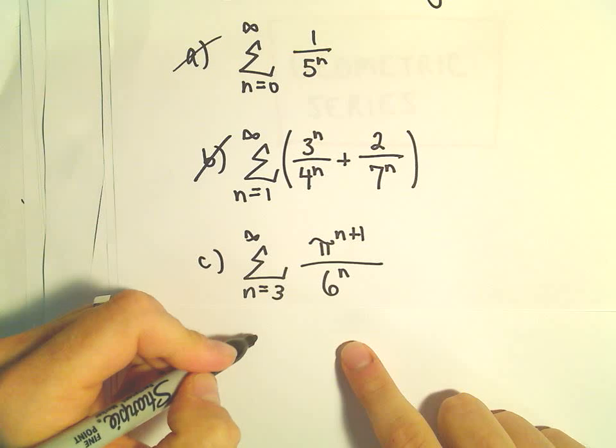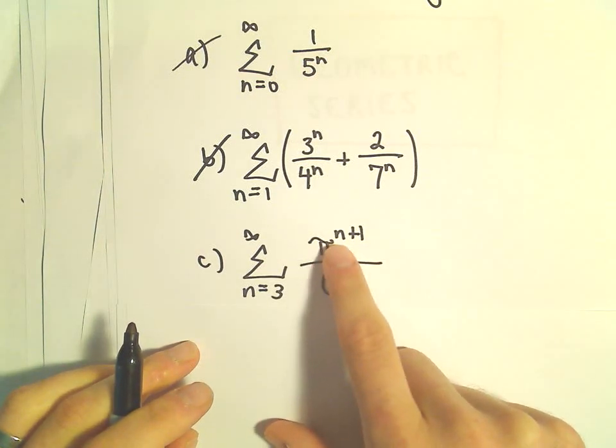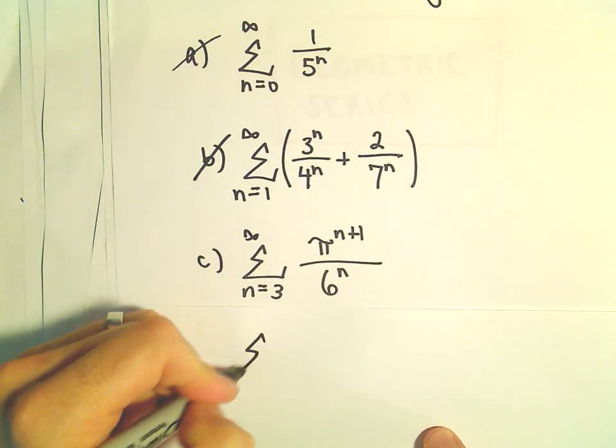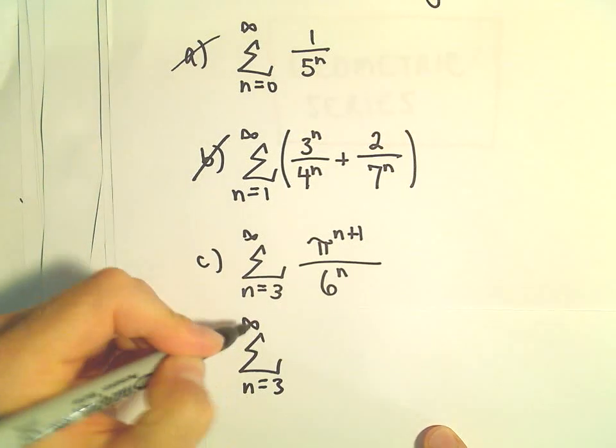So in this case, I see this number raised to the n, but this has an n plus 1, this is just raised to the n. The first thing I'm going to do is sort of break up that exponent.